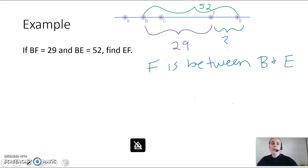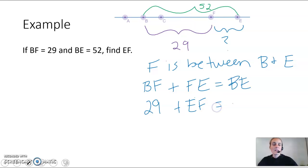So that means that BF plus FE is equal to BE, and BF we're given as 29. FE is the same thing as EF, so I'm just going to rewrite that. And then BE we're given as 52. So if we're solving that equation for EF, the segment measurement that's left over, we could subtract by 29.